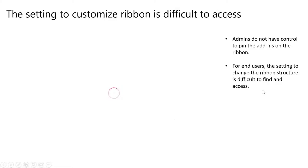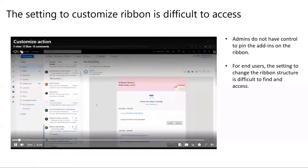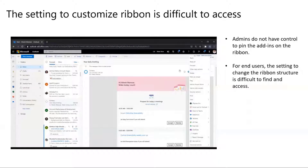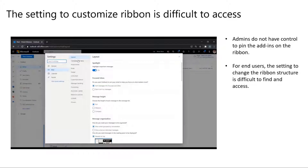If you know about this setting, it'll take about four clicks and a scroll for you to go into the Outlook settings and choose the add-in that you want to pin on the ribbon.